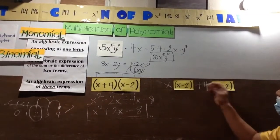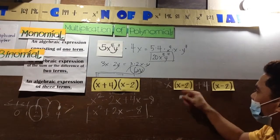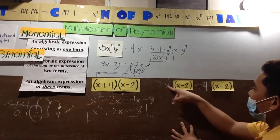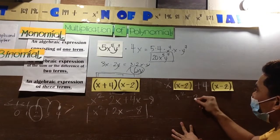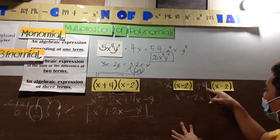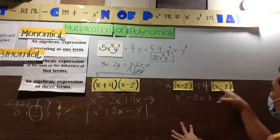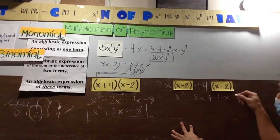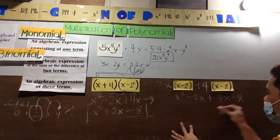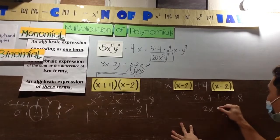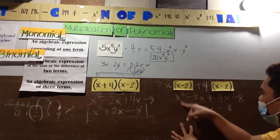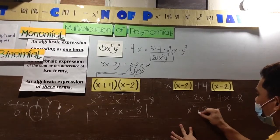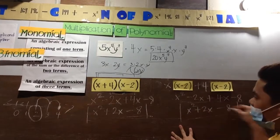Plus 4, plus 4, then distribute it there. So what will happen - distributive property is what we'll use. So what will happen - distribute: x times x will be x squared, x times negative 2 will be negative 2x, plus 4 times x will be 4x, then 4 times negative 2 will be negative 8. Again, combine like terms so it becomes 2x, then bring down, bring down. So the correct answer is this. Are they the same?